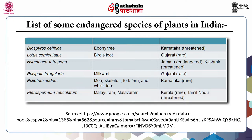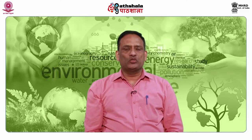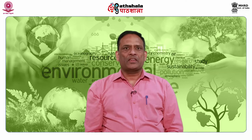Pterospermum reticulatum, known as Malurum, is found in Kerala and its status is rare, and in Tamil Nadu its status is threatened. I suggest you please make a list of different plants that are threatened, rare, or endangered in your region.